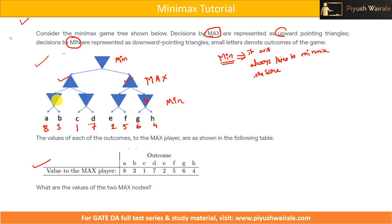Same here. At this particular point, it will also try to minimize the score. Out of E and F, which one is minimum? E, that is 2. So the value of this particular node will be 2. At this particular point, the min player has two choices — either C or D — but it will always try to minimize the score. So C is selected, which gives 1. The value of this node is 1.